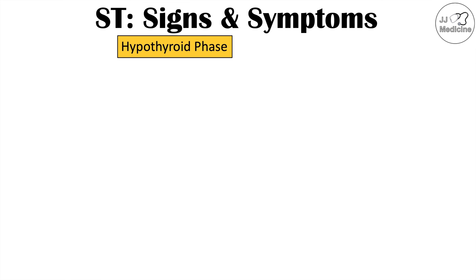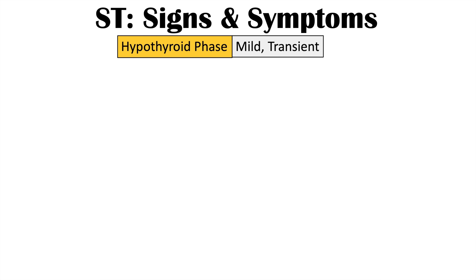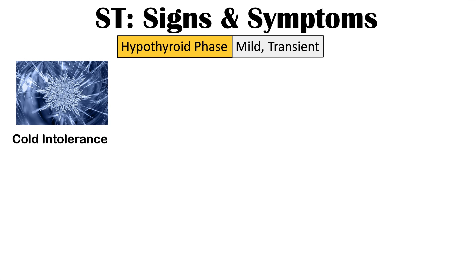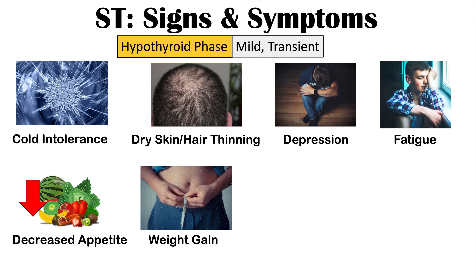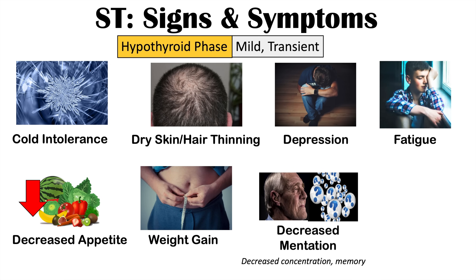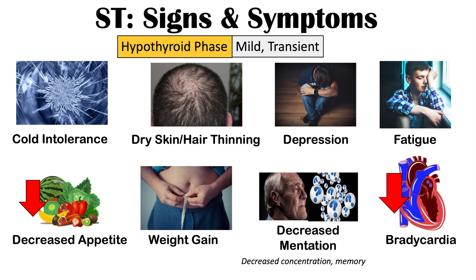Patients may also go into a euthyroid state — a normal state of thyroid functioning — and then lead into a hypothyroid state, which would be a low thyroid functioning state. Again, this is going to be mild and transient. Signs and symptoms of hypothyroidism can include cold intolerance, dry skin or hair thinning, depression, fatigue, decreased appetite, weight gain, decreased mentation — so decreased concentration and decreased memory — and bradycardia, which is a heart rate less than 60 beats per minute. Not all patients will have these signs and symptoms, or they can be very mild.